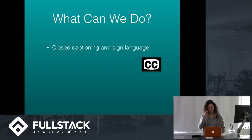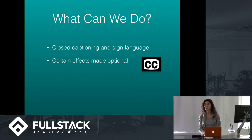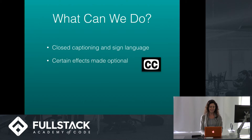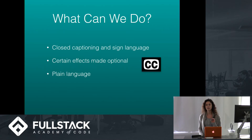Also, we can use closed captioning or sign language versions of videos for users with auditory issues. And we can make certain effects optional, such as flashing lights — that's obviously a big one for some users. And finally, we can make sure to use plain language, and also include illustrations with instructional diagrams or animations, so that we can facilitate users with cognitive disabilities.